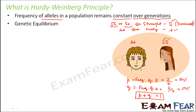Now even if you assume that the straight hair was heterozygous, in that case also p plus q is going to be one. That is the total frequency of all the alleles is going to be constant. For example, in that case p, the frequency of capital S, would be one out of four, and q would be three out of four. So p plus q would again be one. So p plus q will always be equal to one, where p and q represent the frequency of each allele.